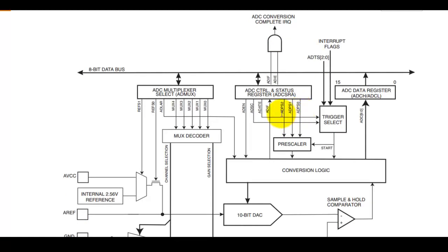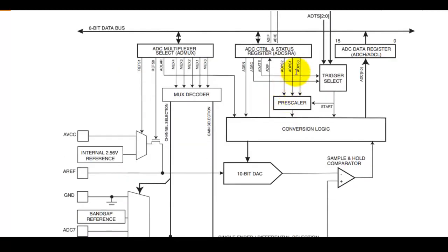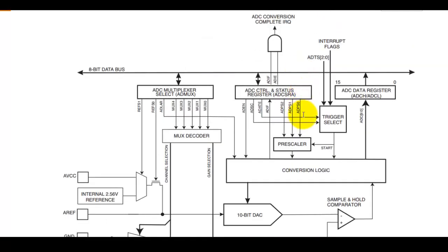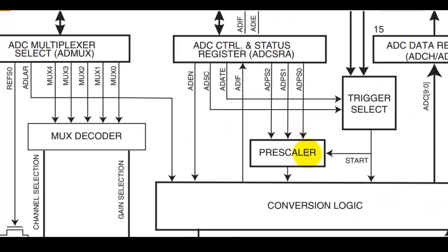These 3 bits select the ADC input clock prescaler: ADPS2, ADPS1, and ADPS0. The microcontroller is running at 16 MHz, but the ADC cannot operate at 16 MHz — the ATmega32 ADC can operate up to a maximum of 250 kHz. There must be a frequency divisor which divides the frequency before it reaches the ADC block, and the prescaler performs this clock division.